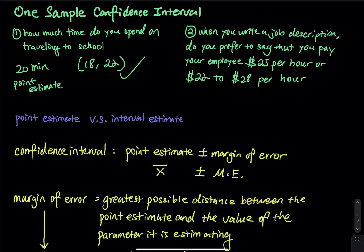Because you only provide one number. And then the 18 to 22, we call this interval estimate. Why do we say the interval is better? Because the interval is more flexible — it contains more values, or you should say the interval is a range of values. So as long as you spend 20 minutes to travel to school, your interval is true, because 20 is between 18 and 22. If you spend 19 minutes, your interval is still true. So as long as you provide a number between 18 and 22, people cannot say you lied to them. That's why we always use interval to estimate.